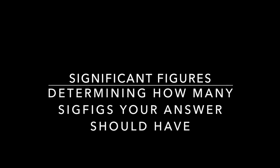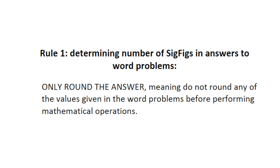There are three more rules when it comes to showing the right number of significant figures in your answer. One rule deals with when to round. Another deals with adding and subtracting. And the third deals with multiplying and dividing. First: only round your answer — don't round any numbers before performing calculations. Calculate all answers with the numbers as given in the word problem, then round your answer to the proper number of significant figures.